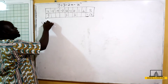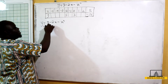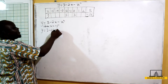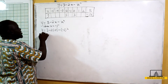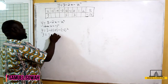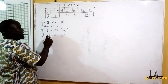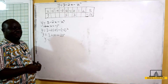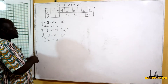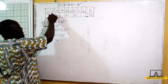If y equals 3 minus 2x minus x squared, then when x equals negative 5, y equals 3 minus 2 times negative 5 minus negative 5 squared. That gives us 3 plus 10 minus 25, which is 13 minus 25, equals negative 12. So when x is negative 5, y is negative 12.